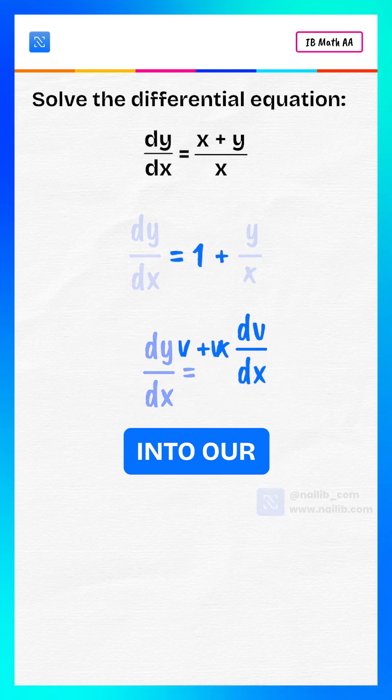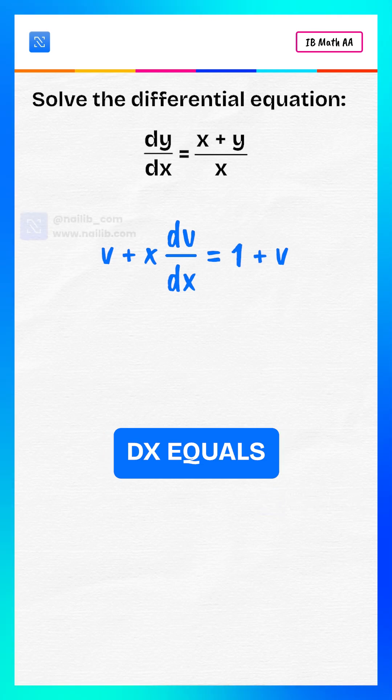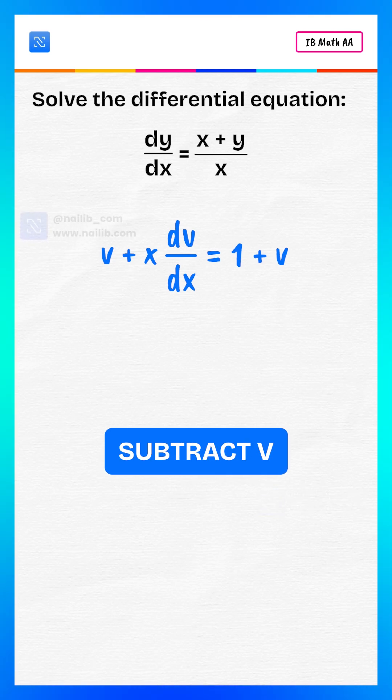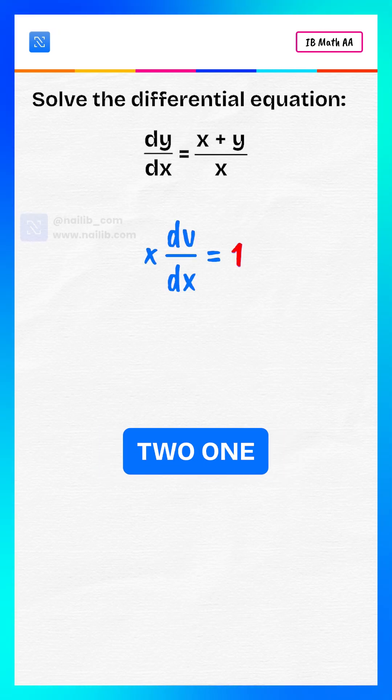Now substitute into our simplified equation. v plus x times dv/dx equals 1 plus v. Subtract v from both sides. x times dv/dx equals 1.